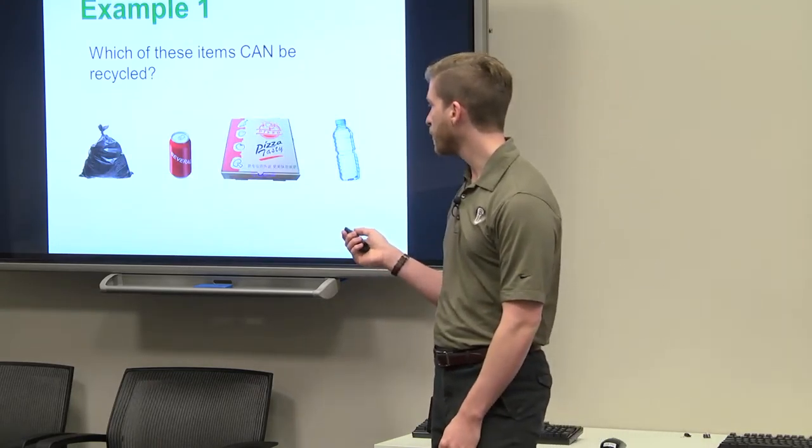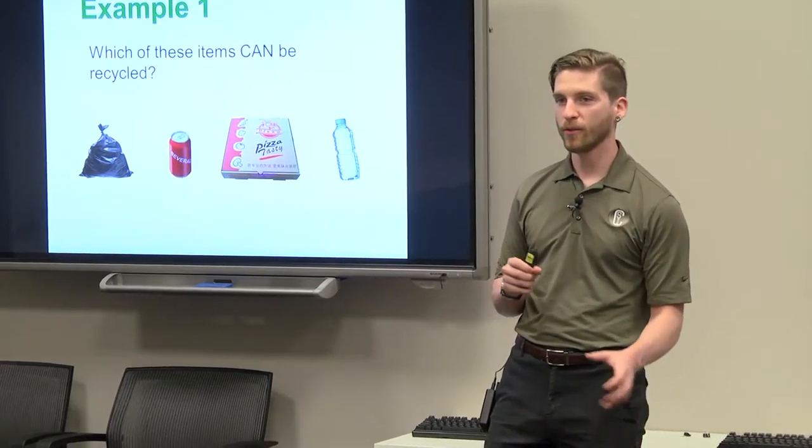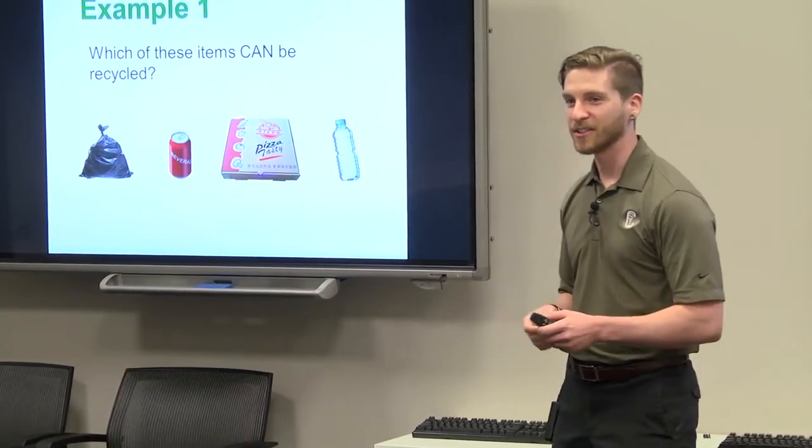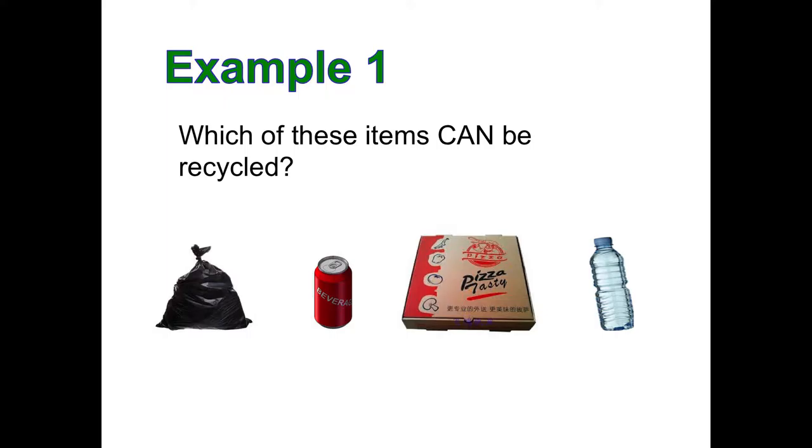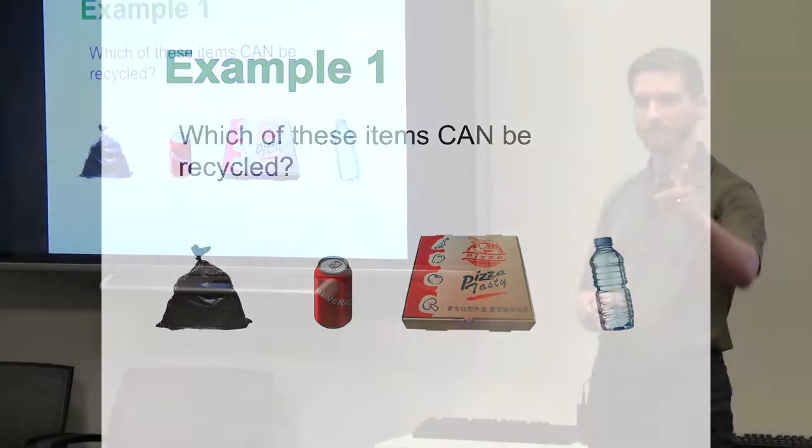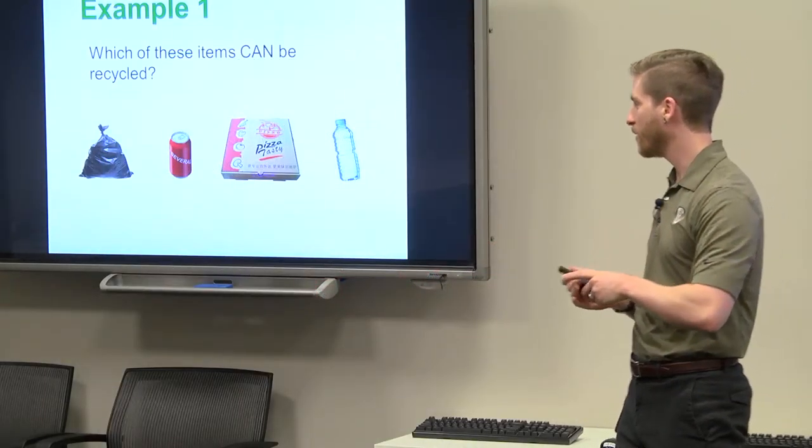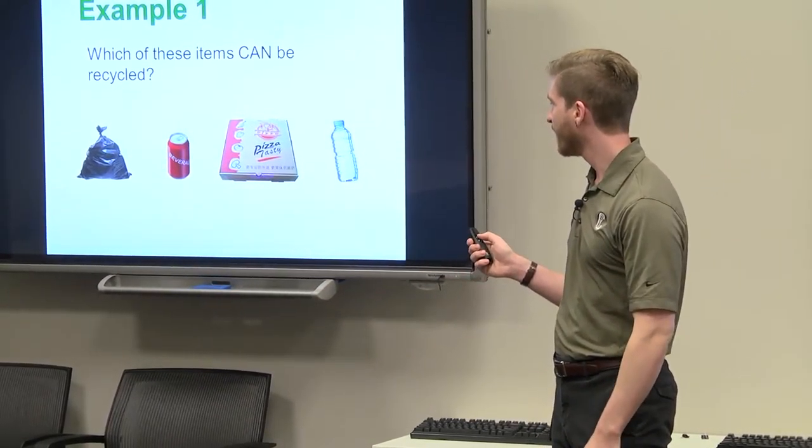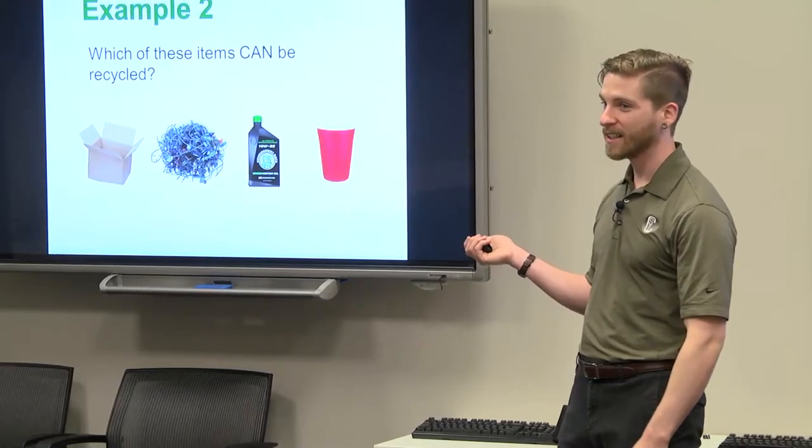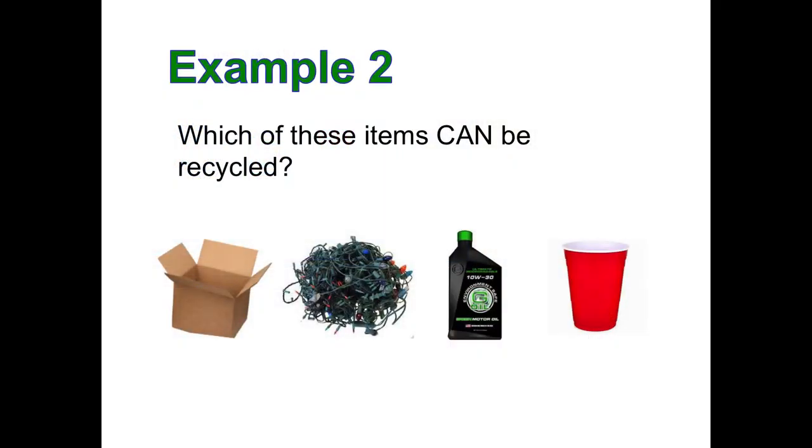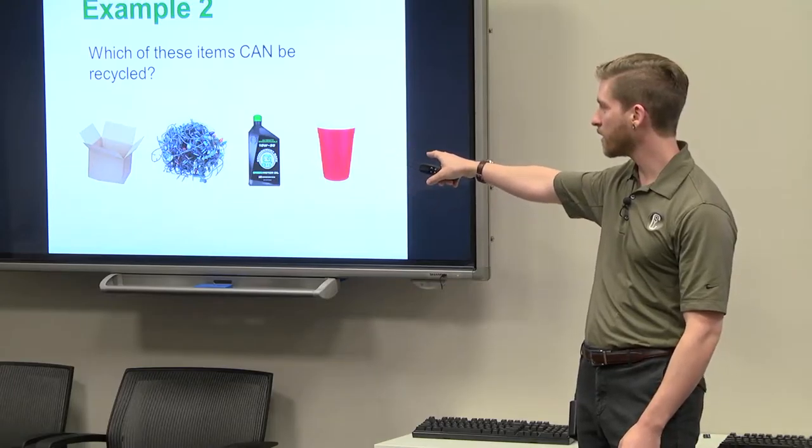So here are a couple of examples. Let's go back to third, fourth grade and just do some class exercises. So out of these four items, which of them can be recycled? So we can in the plastic water bottle. This is the last slide. So which ones out of these could be recycled? One in the fourth. That's right. Cardboard box and the plastic cup.